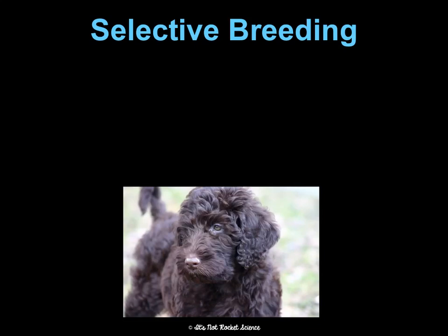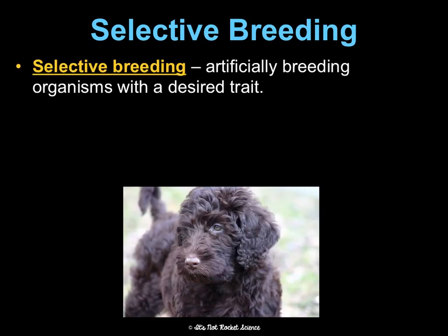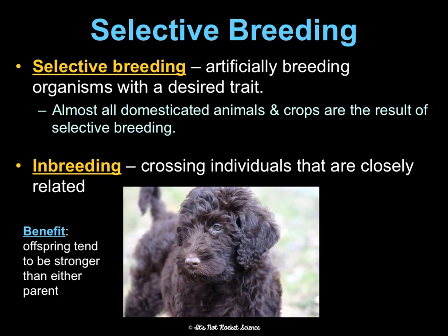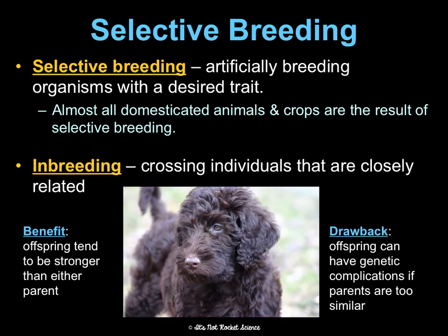Selective breeding is when we artificially breed organisms in order to get a desired trait. Almost all domesticated animals and crops are the result of selective breeding — for example, breeding two tomato plants that have done really well, or breeding two dogs because we want certain traits. The benefit is offspring tend to be stronger than either parent because they have desired traits. The drawback is they can have genetic complications, especially through inbreeding when parents are too similar. We see this in labs, which often have serious hip issues because of generations of inbreeding.